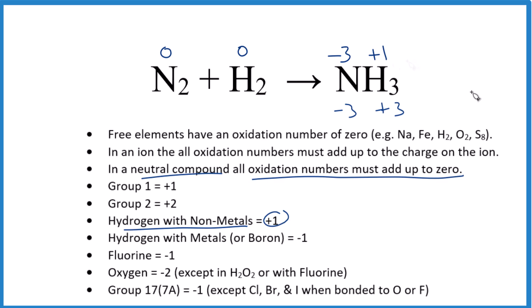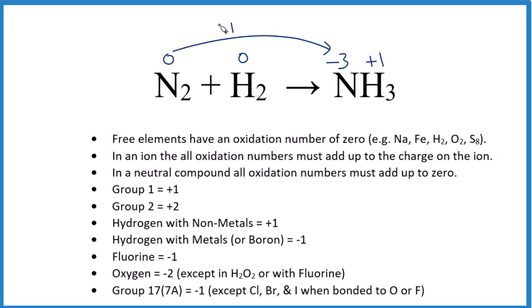So now to see if we have redox, we look whether the oxidation numbers change. Zero to negative three. This got smaller. This was reduced. Zero to plus one. That got bigger. We say that was oxidized. So we have reduction, oxidation, transfer of electrons. This is a redox reaction.